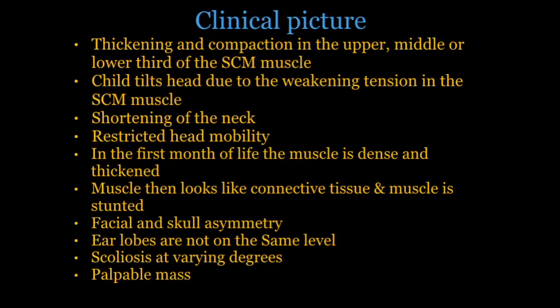The child is seen to tilt the head due to weakening tension in the muscle, with shortening of the neck and restricted head mobility. In the first month of life the muscle is dense and thickened, thereafter resembling connective tissue. The child presents with facial and skull asymmetry, earlobes not on the same level — known as positive symptom Felca — and scoliosis at varying degrees with a palpable mass.